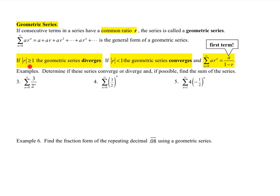Now, if the ratio is greater than or equal to 1, the series diverges. If the ratio is, or the absolute value of the ratio, I should say, is less than 1, then the geometric series converges. So I think I said this first one wrong, but the absolute value of r greater or equal to 1 means that r is greater than or equal to 1 or less than or equal to negative 1.